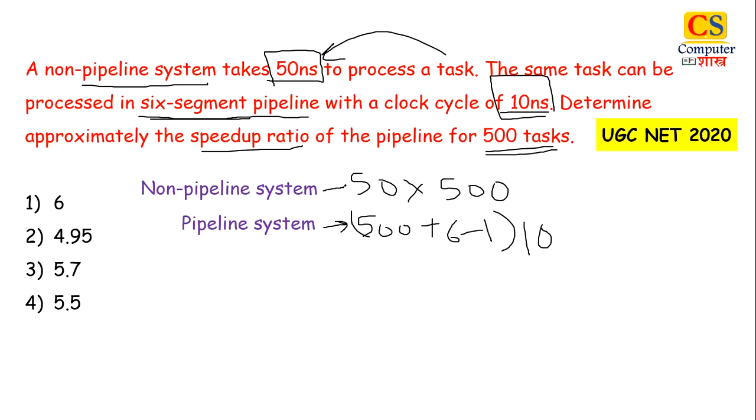It's 50 times 500 in case of non-pipeline. Speedup ratio is non-pipeline system divided by pipeline. How much time is non-pipeline divided by pipeline. When you solve it, you will get 4.95. This was a very easy and simple question from pipeline. So right answer will be option 2.